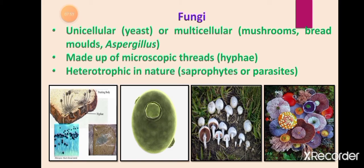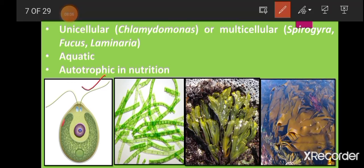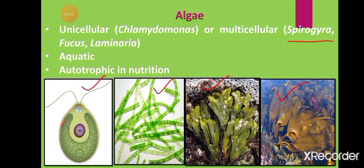The next group is algae. Algae may be unicellular, like Chlamydomonas, or multicellular, like Spirogyra (pond scum), Fucus, and Laminaria, which can be very large. They range from very tiny to very large plant-like bodies. They are aquatic, meaning they live in water.